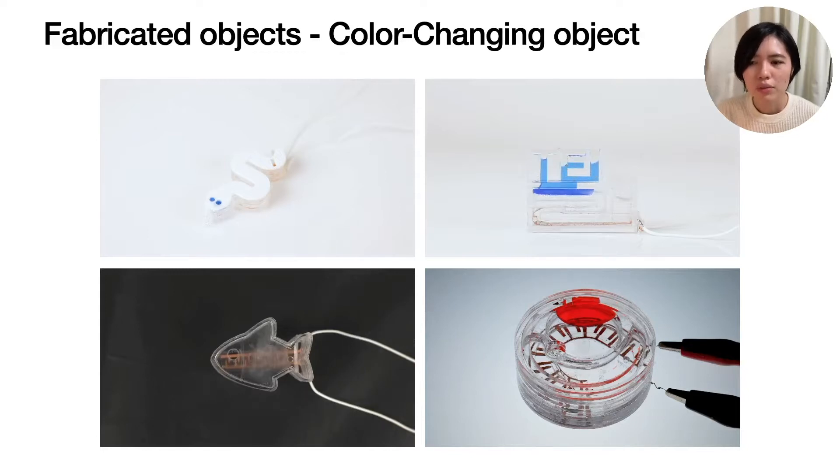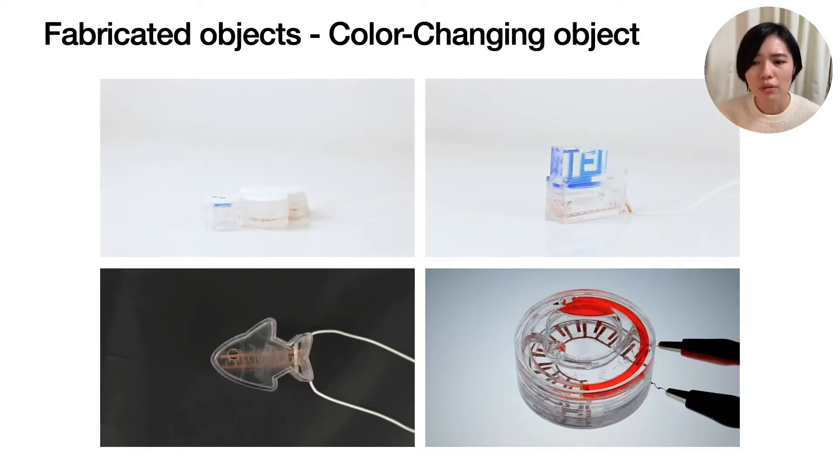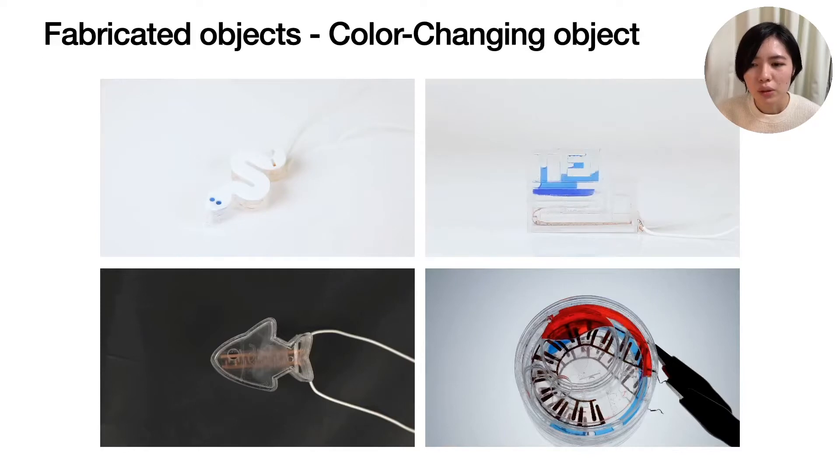Using this system, we have prototyped three types of objects. The first prototype uses the EHD pump to move colored liquids. To move colored liquids by pump, we can display information and create animation on the object.